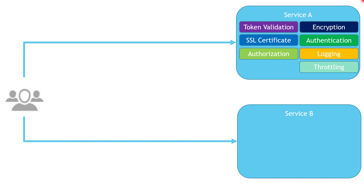We also have logging that needs to be implemented at different levels — from clients sending requests to the services, to our services sending responses back to the clients. Not only that, we also want to log all communications between Service A and backend functions or services, and even the database. This will help us to troubleshoot and diagnose any issues that might happen in our system and find resolutions sooner.